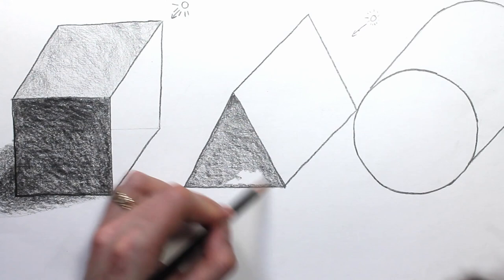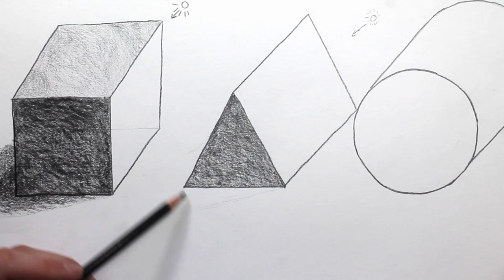The triangular prism is much the same with one side darker than the other and this cast shadow on the floor.